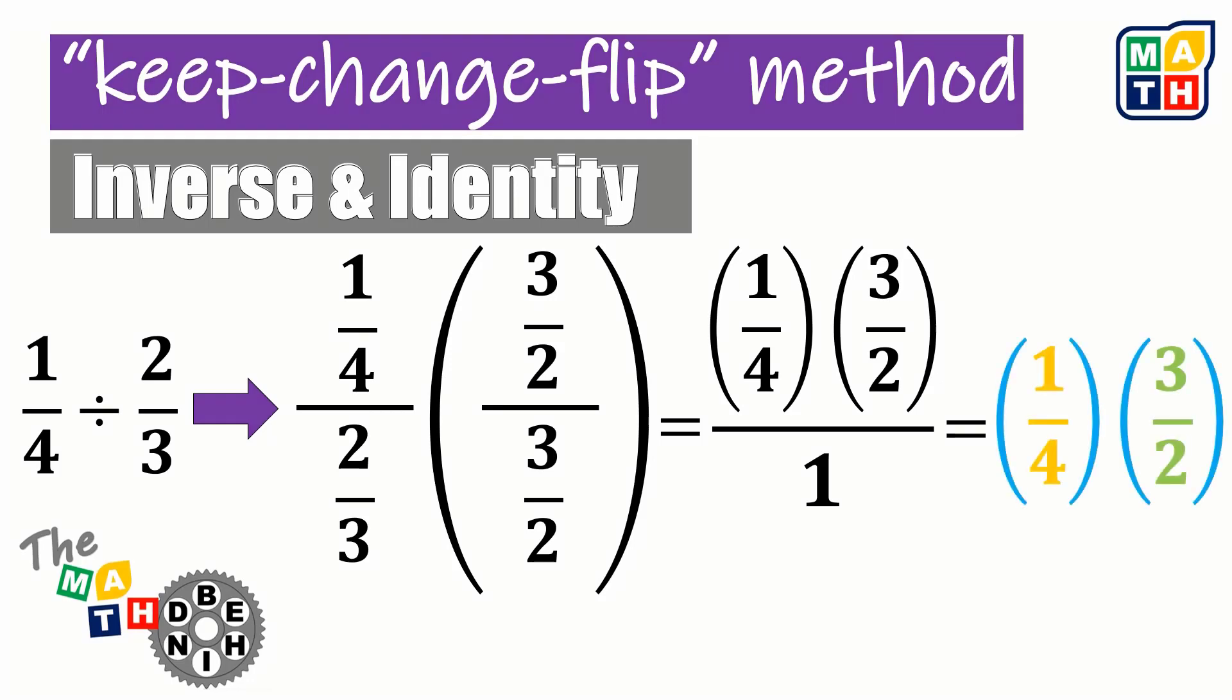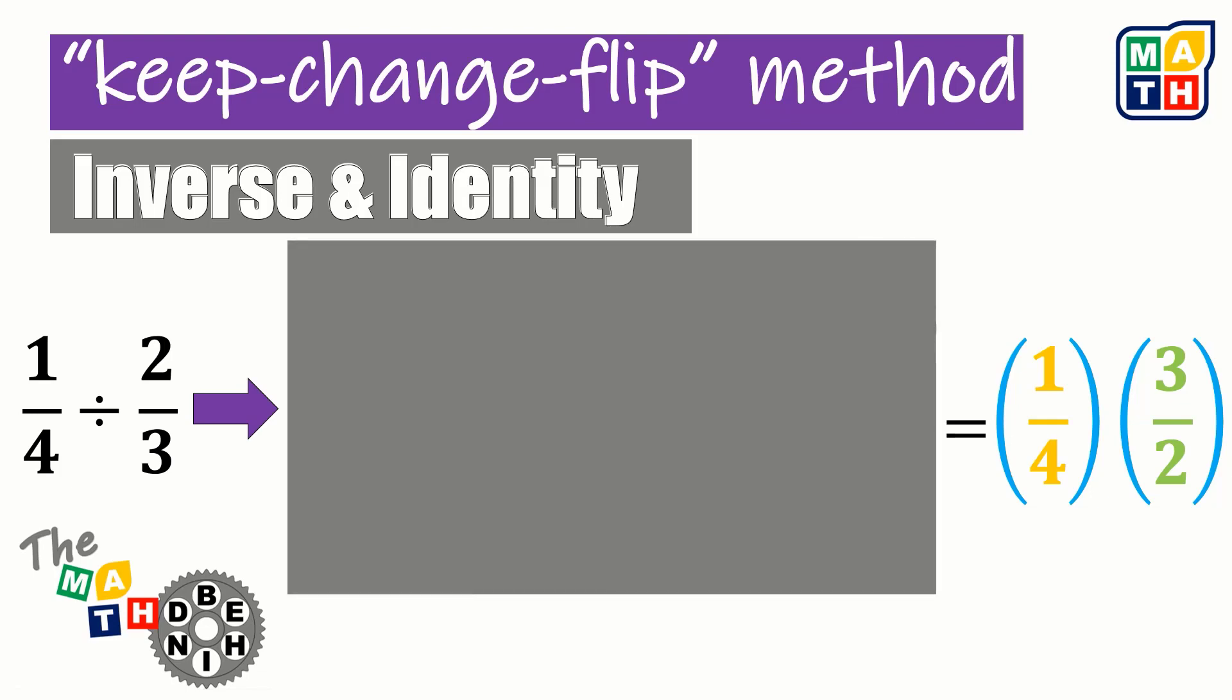Now, if we are going to cover this middle part, we could see that the first fraction in the final form is just the same as the first fraction in the given. In short, we just simply kept it that way. Next, we could see the difference in the operations, that in the final form, it is in multiplication, and it looks like we are just changing the division into multiplication.